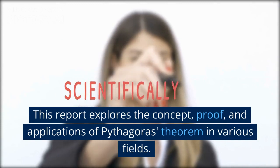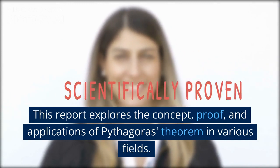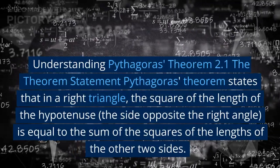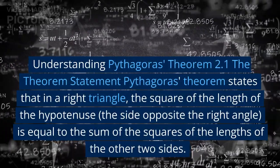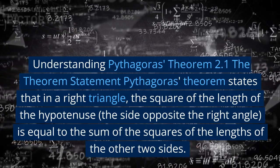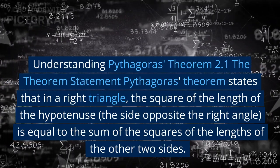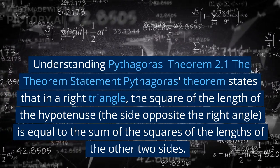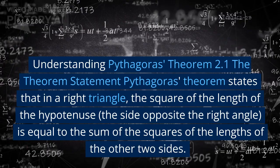This report explores the concept, proof, and applications of Pythagoras' theorem in various fields. Understanding Pythagoras' Theorem: The Theorem Statement. Pythagoras' theorem states that in a right triangle, the square of the length of the hypotenuse (the side opposite the right angle) is equal to the sum of the squares of the lengths of the other two sides.